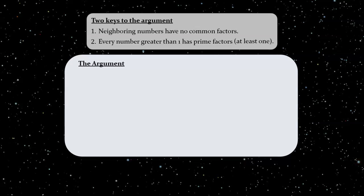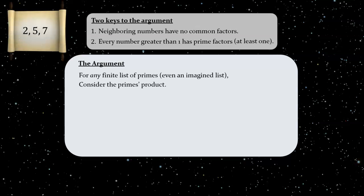The argument is necessarily abstract, but I'm going to illustrate it with concrete examples as we go to help you grasp the ideas. So, here we go. For any finite list of primes, even an imagined list, and of course we can imagine lists that are small or incomprehensibly large, we want to consider the prime's product. So, to illustrate over in the margins, if our list consists of the primes 2, 5, and 7, then we're going to consider their product, which is 70.